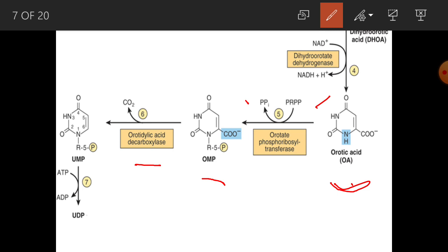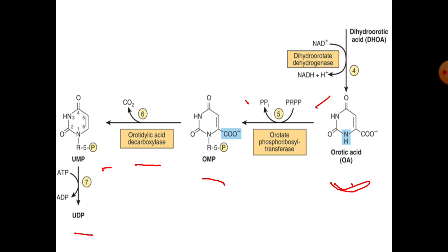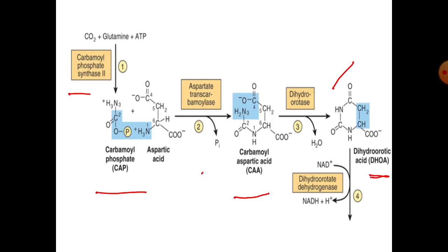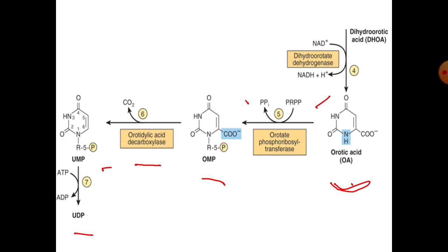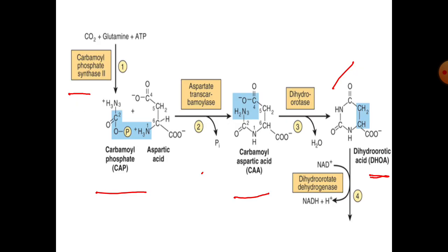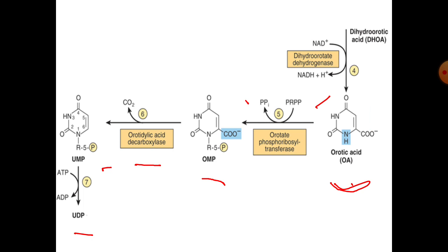The first pyrimidine nucleotide, uridine monophosphate (UMP), is obtained. Further, in the presence of kinase and with expenditure of ATP, we get UDP, and then UTP. So beginning with respiratory carbon dioxide, glutamine, and ATP, the junction product orotic acid is formed, from which OMP and subsequently UMP and UTP are obtained.